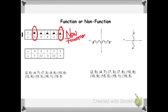Now let's look at our second table. In our second table, we notice x values of negative 3, negative 2, 0, 2, and 3. None of my x values are repeated, so the possibility of the same x value being paired with different y values does not exist. So this is a function.